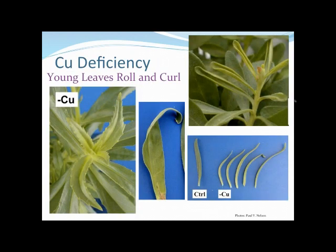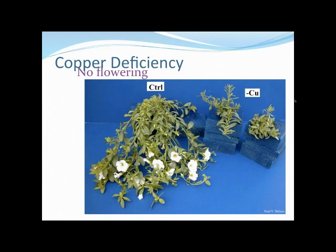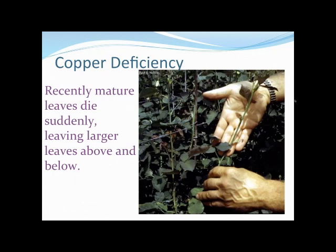Here's leaf roll from copper deficiency, and the difference in flower color — the copper-deficient plant on the left is much lighter, almost pink, but you need to know what you're expecting. Here you can also see no flowering on the copper-deficient plants — same cultivar, grown at the same time, but smaller and with no flowering. Also, the recently matured leaves in the middle of the stem dropped, while the growing tip at the top and the lower leaves are both unaffected.